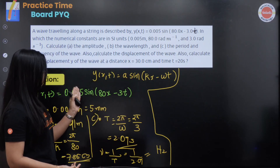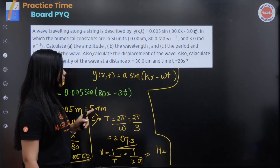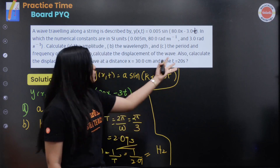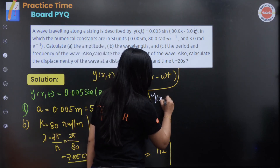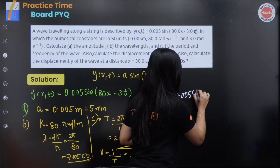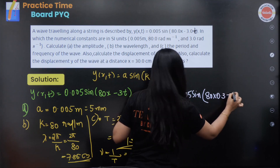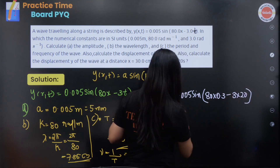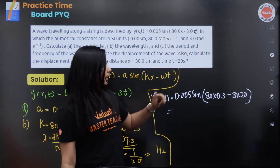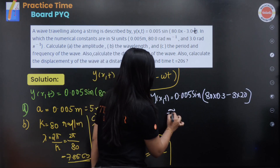To find displacement, substitute x = 0.3 m and t = 20 seconds into the equation: y(x,t) = 0.005 sin(80 × 0.3 − 3 × 20). Solving this gives approximately 5 millimeters.